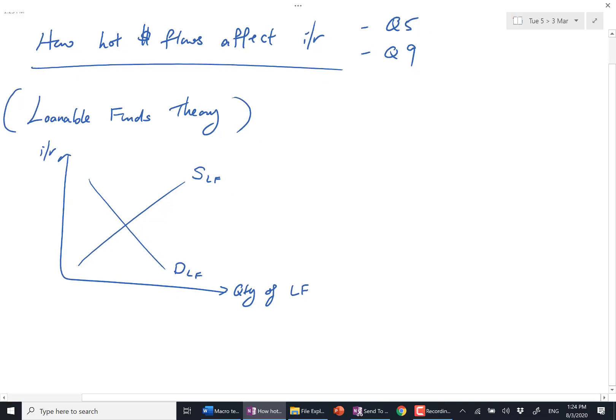Let me explain. Demand for loanable funds means people who want to borrow money, simple as that. Who are those who wish to borrow? It could be a household - households borrow to buy big ticket items. Firms also borrow to make investments. Who else can borrow by issuing bonds?